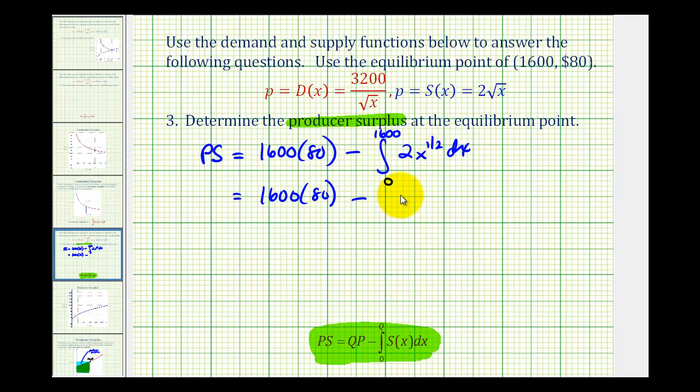this is going to be 2 times x to the 1/2 plus 1, that's 3/2. So I'll have x to the 3/2 divided by 3/2, but we'll multiply by 2/3 instead. We'll evaluate this at 1600 and zero.